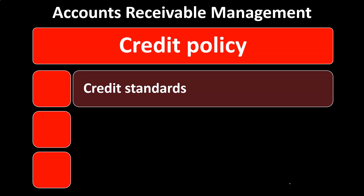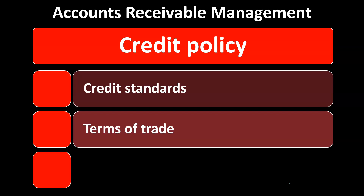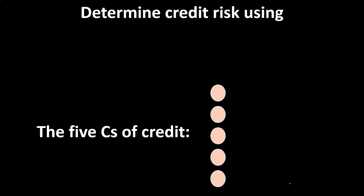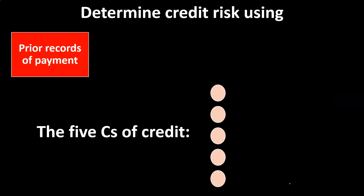The credit policy we want to consider includes things such as credit standards, terms of credit, and the collection policy regarding accounts receivable — those sales for which we have not yet been paid. In terms of determining credit risk: if we make a sale on account and didn't get paid at the point of sale, we want to think about whether this is someone we want to do business with and whether they're actually going to pay us in the future according to our policies.